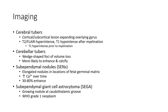Imaging of cerebral tubers: These are located in the cortical and subcortical region, expanding the overlying gyrus. On MRI they are T2/FLAIR hyperintense. They are T1 hyperintense after myelination and T1 hypointense prior to myelination.